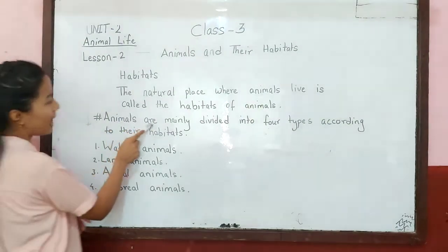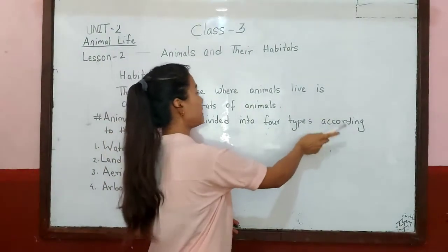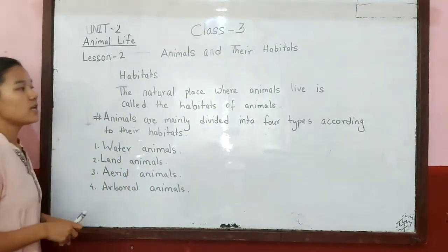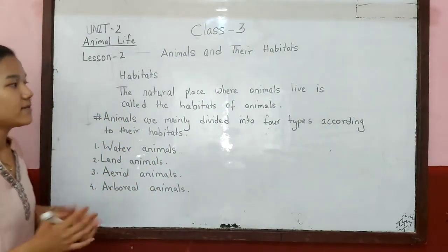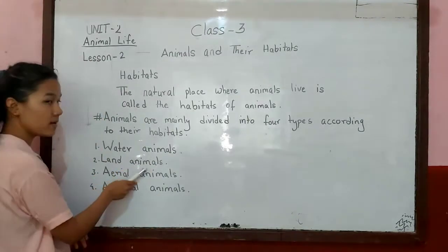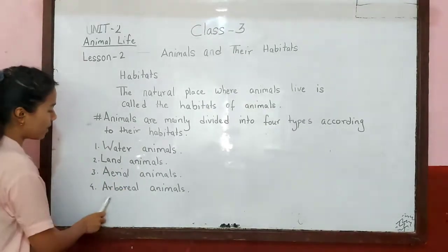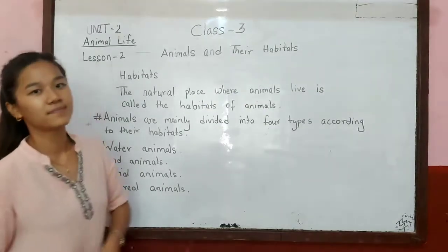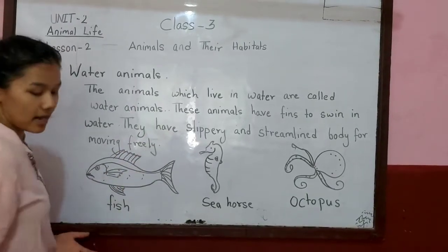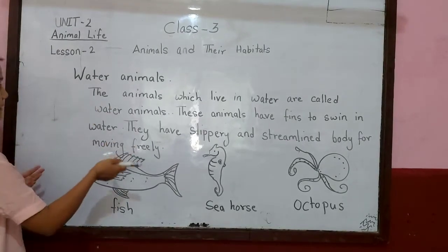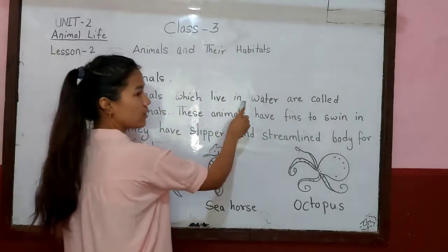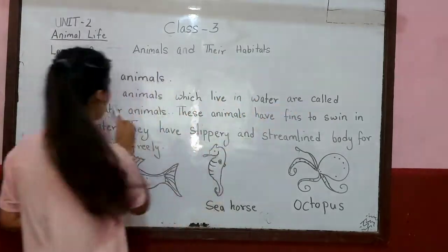Animals are mainly divided into 4 types according to their habitats. We have already learned about the definition of habitats. Right now we are going to learn about types of habitats. First of all, water animals — the animals which live in water are called water animals.